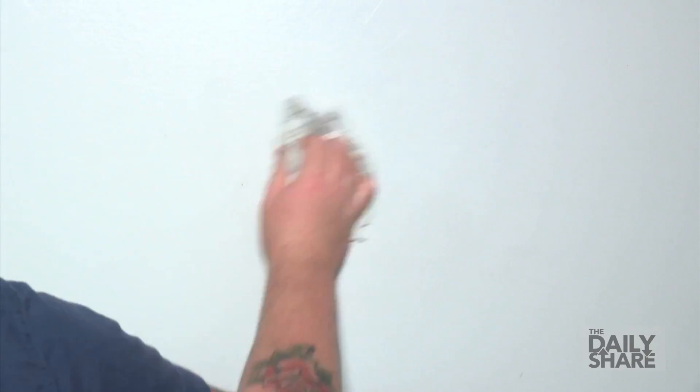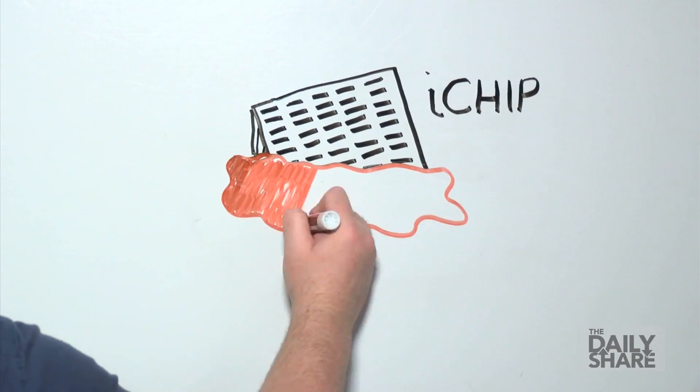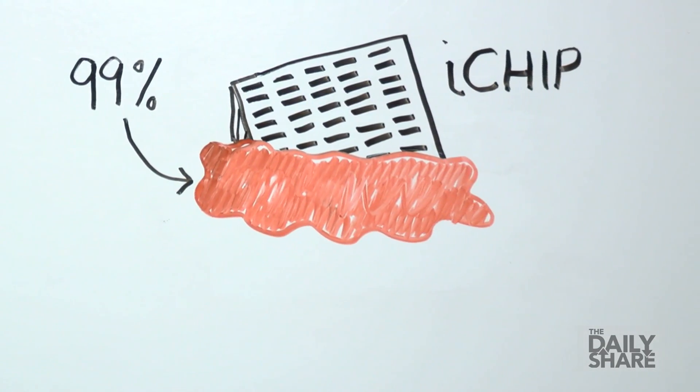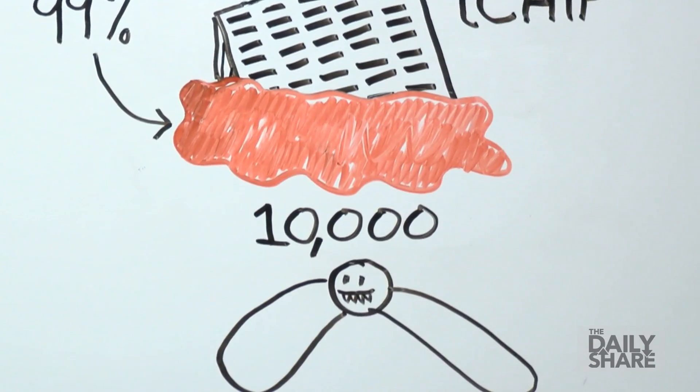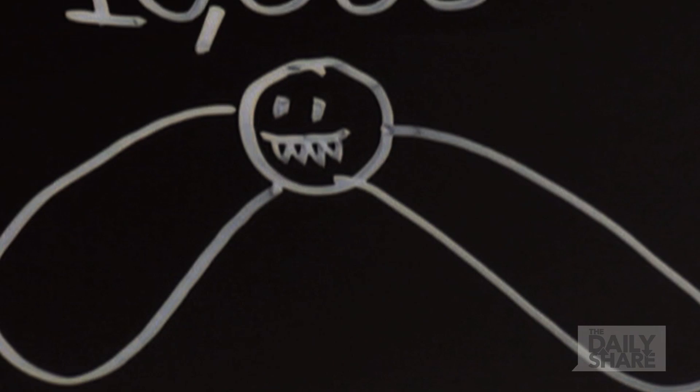Researchers replaced the petri with a special device, the i-chip, taking it out of the lab and sticking it in the mud, giving it access to the other 99% of microbes in the environment. After screening 10,000 bacteria, it found an unknown microbe, Elepheria teri, and this microscopic creature is what makes our new antibiotic.